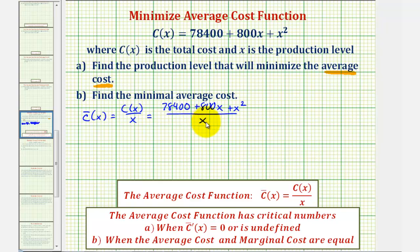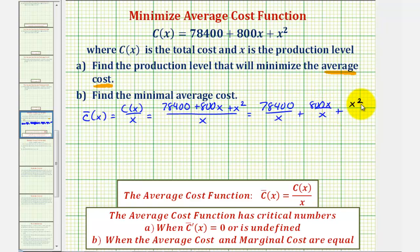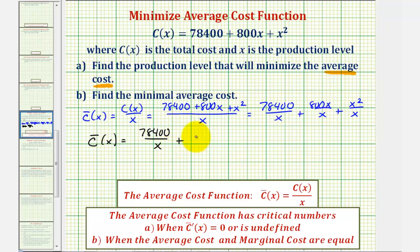Because we're dividing by a monomial, we want to divide each term in the numerator by x. So we have 78,400 divided by x, plus 800x divided by x, plus x squared divided by x. So the average cost function is equal to 78,400 divided by x, plus 800, plus x.